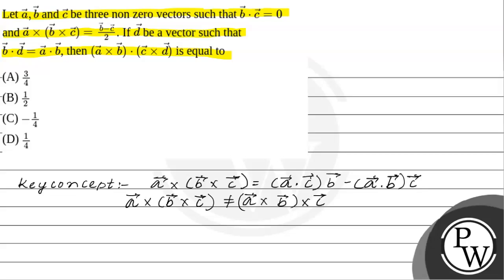Now we will use this formula to simplify this question. So first we have a×(b×c) = b/2 - c/2. This information is given in the question.